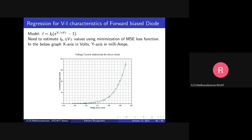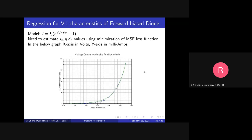You might have seen this in electronic devices and circuit courses — the forward bias VI characteristics of a diode. For example, these are your observations — some dots, cross marks — you're changing the forward bias voltage and finding the current in milliamperes. These blue color cross markings are your observations. Someone asks you to give the value of current for a particular voltage — can you guess that without doing the experiment?